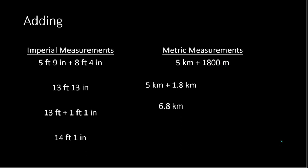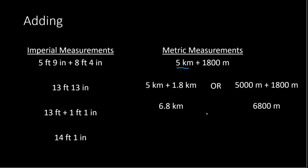The other way would be converting 5 kilometers into meters. Since 1 kilometer has 1,000 meters, 5 kilometers would be 5 times 1,000, or 5,000 meters. So we have 5,000 meters plus 1,800 meters, which gives you 6,800 meters. Either way, we get the same final answer, just expressed in different units. It does not matter which way we do this, unless the instructions specify one versus the other. That covers addition.